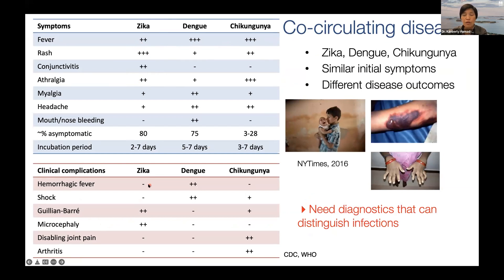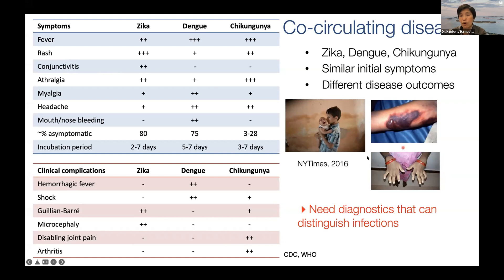Even though their initial symptoms are quite similar, their clinical outcomes are dramatically different. Zika results in microcephaly for the unborn infant in pregnant women and also Guillain-Barré — neurological diseases. In the case of Dengue, you're at risk for hemorrhagic fever where your insides break down and you're at risk for bleeding to death. And then Chikungunya, you're at risk for arthritic pain.